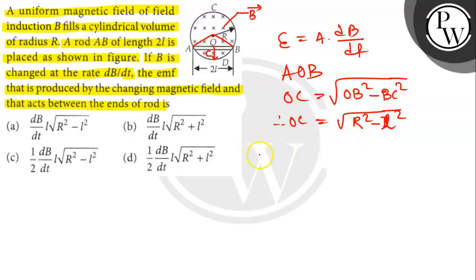So area of triangle A is equal to half into OC into AB. So A is equal to half root over of R square minus L square into 2L.